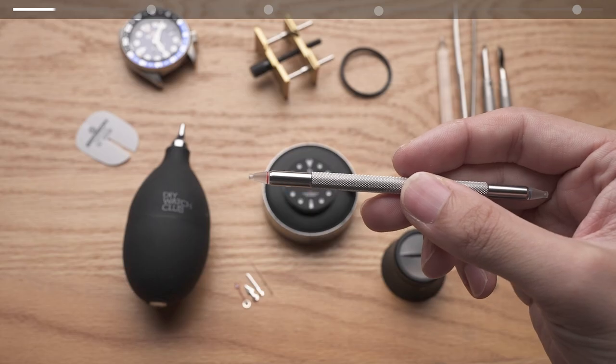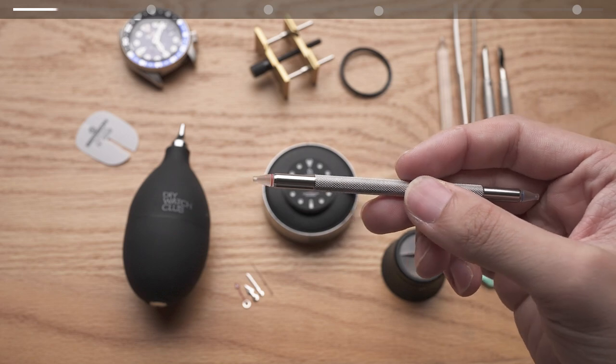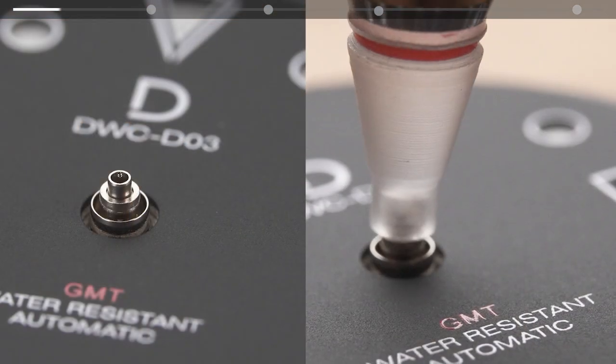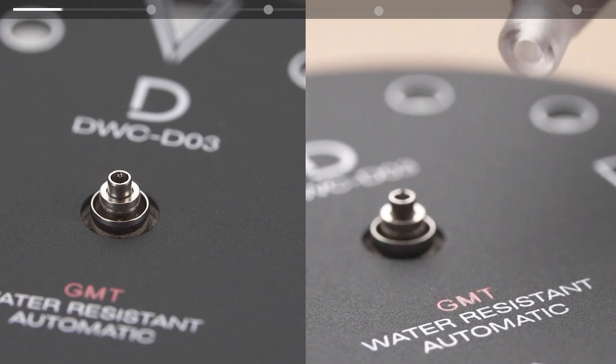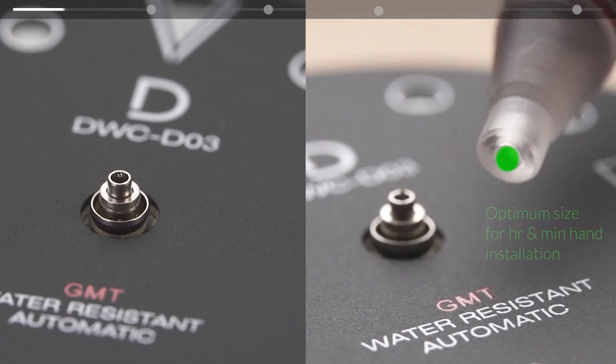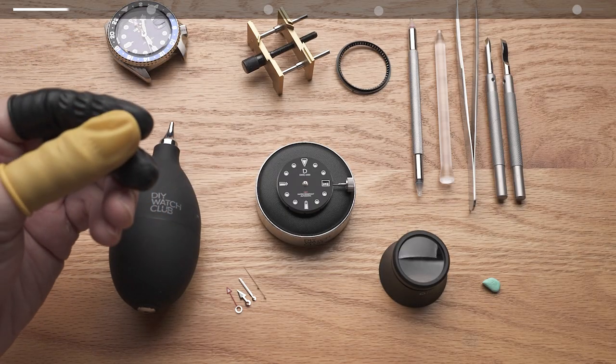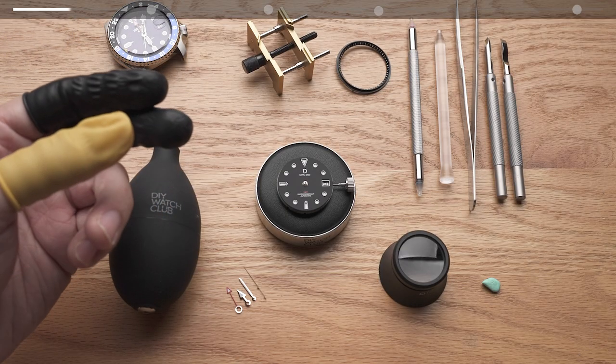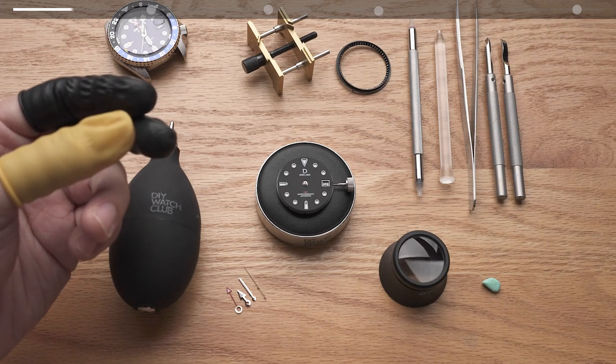For the hand installation tool this type is more than enough for most cases. For hour and minute hand installation choose the tip that has the center hole slightly larger than the post of a minute wheel. If the hole is too big you'll have worse control and risk bending the watch hand, while if the hole is too small you won't be able to set the hour hand.